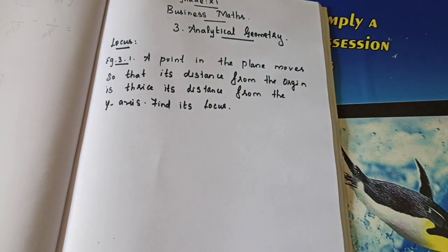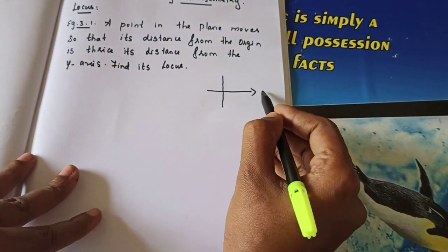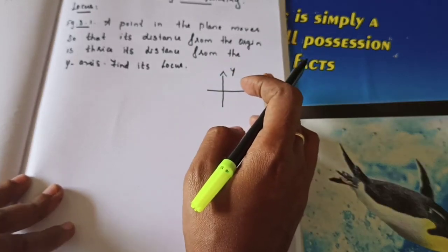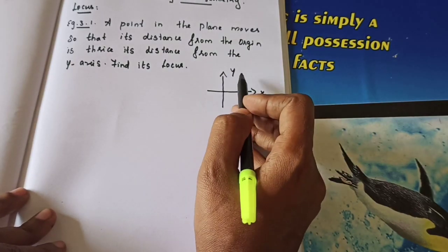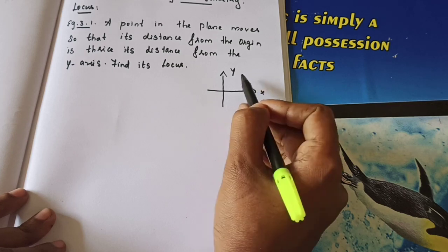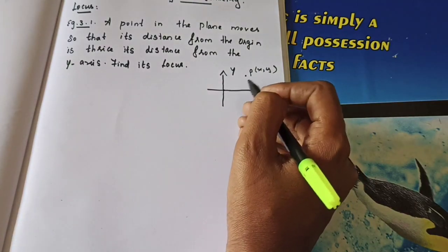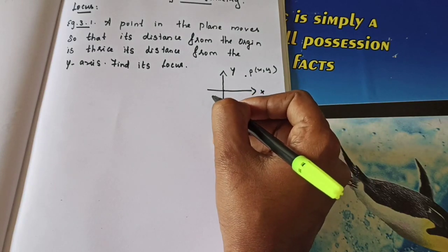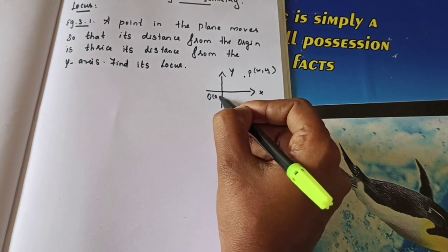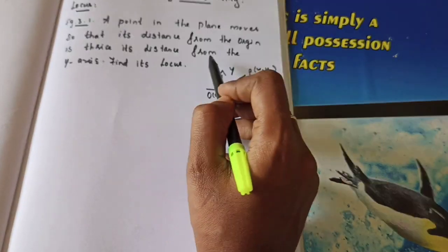Example 3.1: A point in the plane moves so that its distance from the origin is thrice its distance from the y-axis. First we are going to draw the diagram — this is the x-axis, this is the y-axis. A point in a plane moves so that the distance from the origin is thrice its distance from the y-axis. We can consider the point P of (x, y) here.